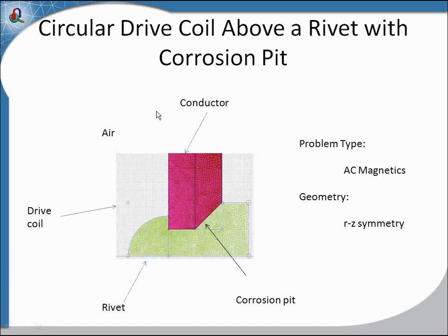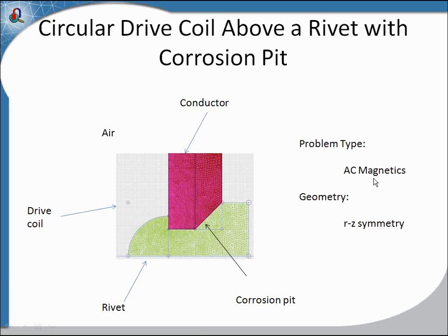As an example of one of the models we'll be looking at: a rivet bonding two conductors together with a corrosion pit on the second layer, where this represents the drive coil — in this case a single filamentary current above the rivet. Once again this is the Z-axis. We'll be performing these simulations in AC magnetics where we calculate the eddy current distribution, and they can also be performed in transient magnetics as well.